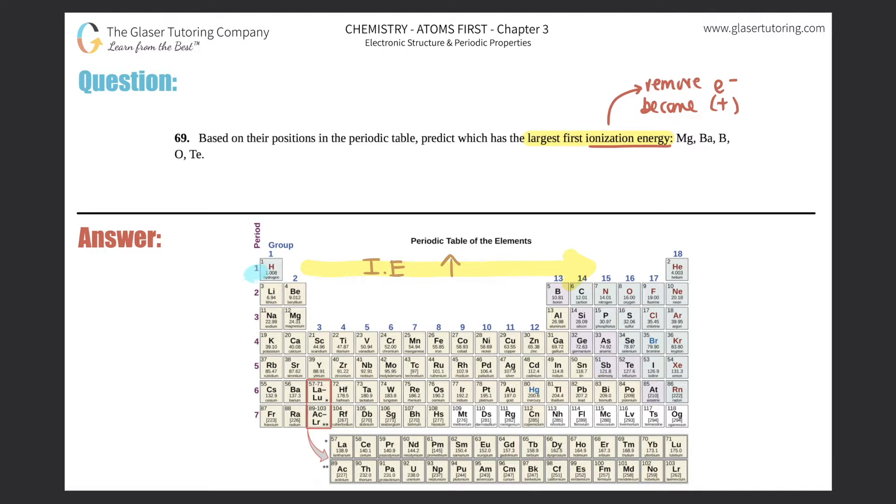Now, going down a group, ionization energy actually decreases. So that means that if I go down a group, let's just say going down fluorine to iodine, that means it would be much harder for fluorine to lose an electron as opposed to iodine. This is because the radii as you go down are much larger, and those electrons are farther away from the nucleus.